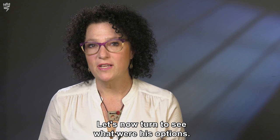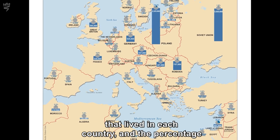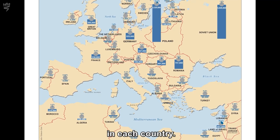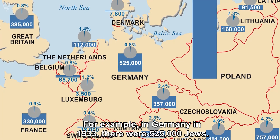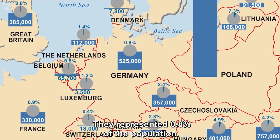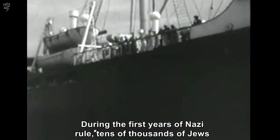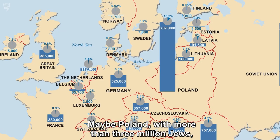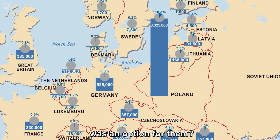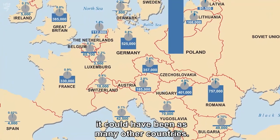Let's now turn to see what were his options. This map shows the approximate number of Jews that lived in each country and the percentage they represented out of the total population. For example, in Germany in 1933, there were 525,000 Jews — 0.8% of the population. During the first years of Nazi rule, tens of thousands of Jews left Germany every year while they still had some choice in their destination. Maybe Poland, with more than three million Jews, was an option, or if they could get a visa and the means to get there, it could have been many other countries.